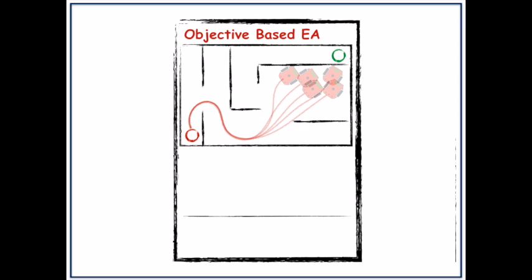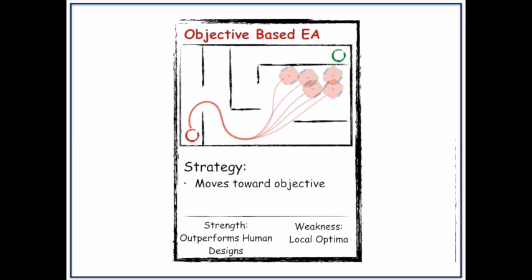One of the tools at our disposal in this quest are objective-based evolutionary algorithms. Their main strategy is to move towards an objective defined by the experimenter. The strength of this algorithm is that it often outperforms human engineers. One weakness is that it gets stuck in local optima.